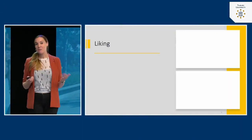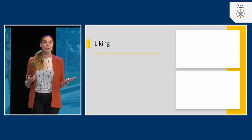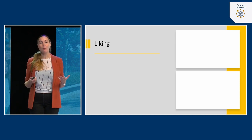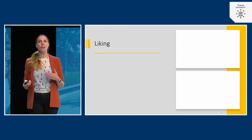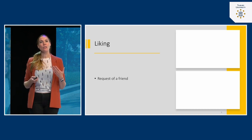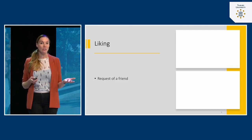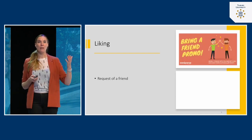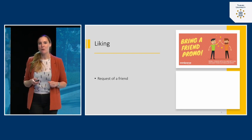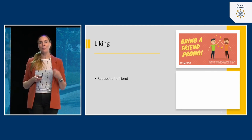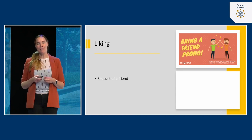The next principle is liking — we prefer to say yes to requests from people we like, know, and find attractive. For example, we don't like to say no to friends. That's why strategies like 'bring a friend' promos exist — if you bring a friend to your gym, you get a discount. Cialdini would approve, because gym owners know it's much easier for existing members to recruit new members than for the gym itself.